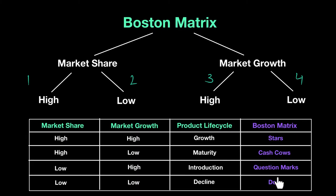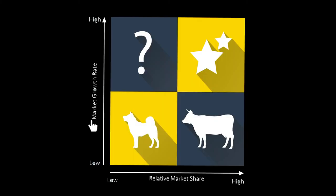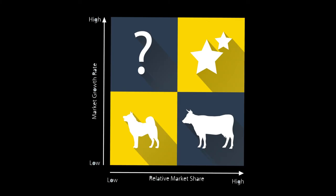So the four Boston Matrix categories are: stars, cash cows, question marks, and dogs. You can place these in a matrix: where market growth rate is high and market share is high, those are your stars; low market share and low market growth is a dog; high market share but low market growth is a cash cow; and high market growth but not much share is a question mark. These four categories result from combining the two factors on the matrix.